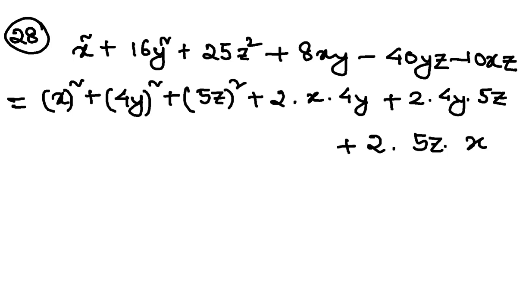The problem is minus 40yz. It was minus 40yz, isn't it? So, but we are getting plus 40yz. So what we'll do now? This term is negative, and this term is negative, right? So we have 40yz is negative, and 10xz is negative, isn't it?